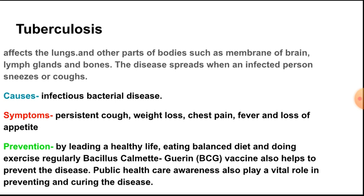Next is tuberculosis. It affects the lungs and other parts of the body such as the membranes of the brain, lymph glands, and bones. The disease spreads when an infected person sneezes or coughs. Causes include bacterial infection. Symptoms include persistent cough, weight loss, chest pain, fever, and loss of appetite.